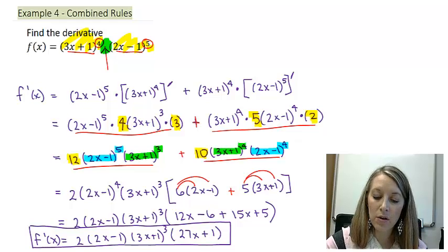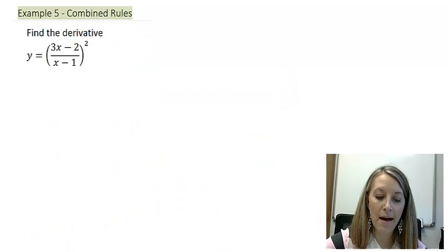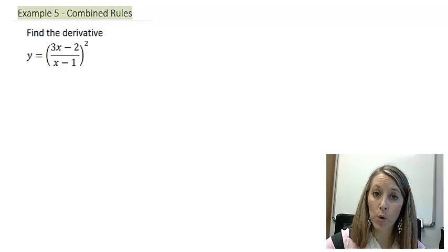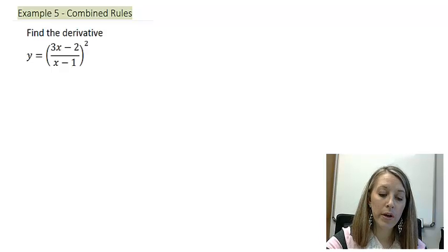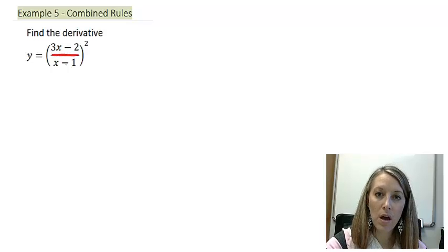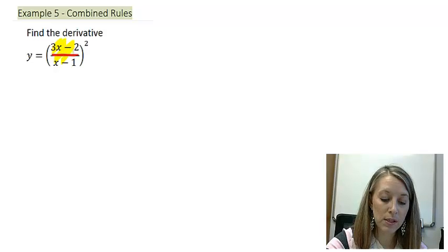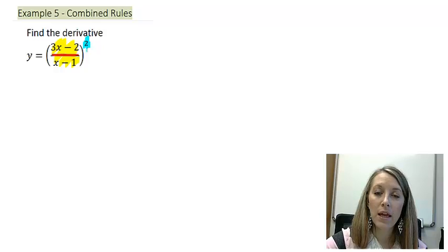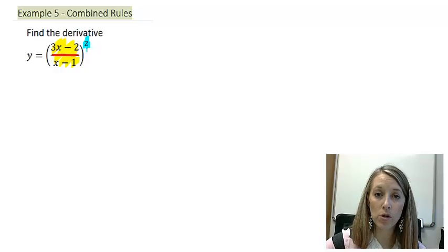Let's look at another example where I have (3x minus 2) over (x minus 1) squared. We know we're going to have to do a quotient rule because there's a fraction, but we're also going to have to do a chain rule because we see an inside and an outside piece. The hardest thing for students to understand is which one do I start with — the quotient rule or the chain rule?